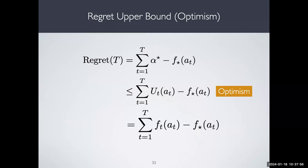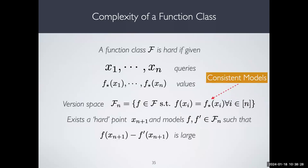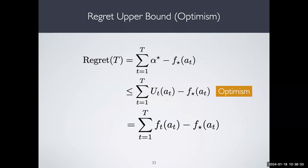To prove a bound, we use the same template as before: regret is as defined; we use optimism to substitute alpha-star by u-t of a-t. Now u-t of a-t is just this optimistic model at a-t, giving us Ft minus F-star evaluated at a-t. We then bound how the difference of values at actions played — between models in the confidence set — decreases over time. The complexity of F, the original function class, shows up in bounding these differences.